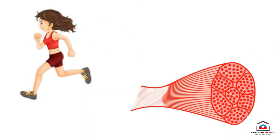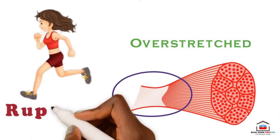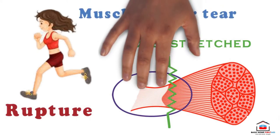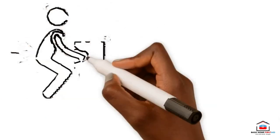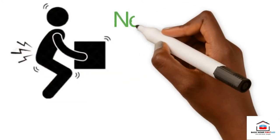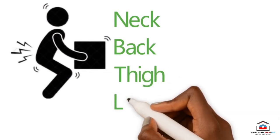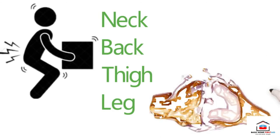A strain occurs when the muscle is overstretched; it may be partially torn, often at the junction between the muscle and the tendon that joins it to a bone. In a rupture, a muscle or tendon is torn completely. The strain is sometimes called a muscle pull or tear. Strains often result from overexertion, such as lifting something too heavy or working the muscle too hard. It commonly involves muscles in the neck or back, the front or back of the thigh, or the back of the lower leg.